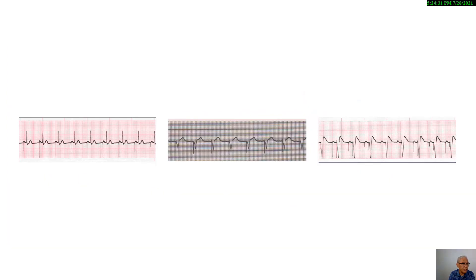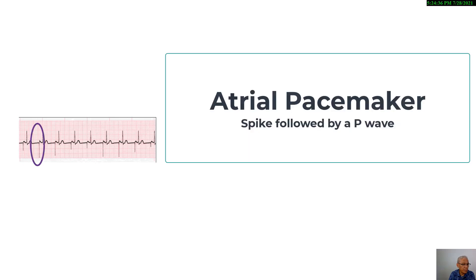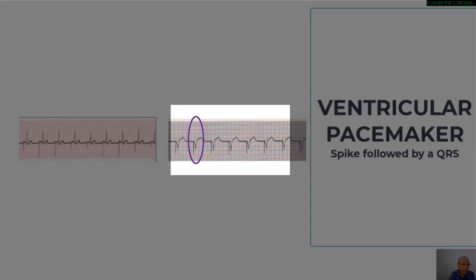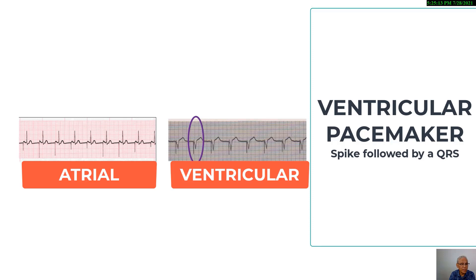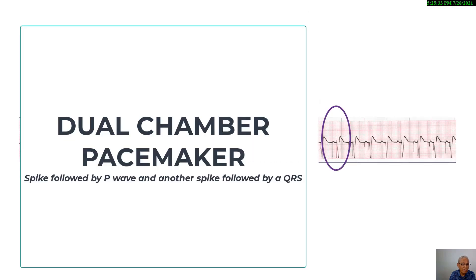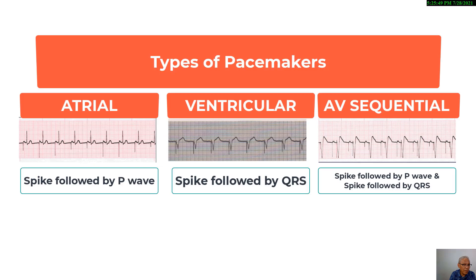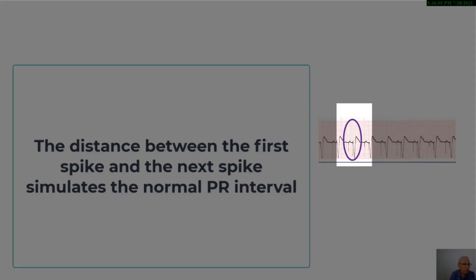The following are examples of pacemaker-initiated beats. The first is a pacing spike followed by a P-wave — an atrial pacemaker, a single chamber pacemaker with pacing and sensing leads in the atrium. The second is a pacing spike followed by a QRS complex, indicating a single chamber ventricular pacemaker. The third is a pacing spike followed by a P-wave and another pacing spike followed by a QRS complex, indicating a dual chamber or AV sequential pacemaker. The distance between the atrial spike and the ventricular spike mimics the normal PR interval.